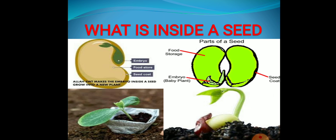Until it reaches sunlight and starts photosynthesis, the baby plant uses the food stored in the cotyledons. In this picture you can see the embryo — that is the baby plant — then food storage, which is stored in the cotyledons. And outside the seed, there is a hard covering called a seed coat.